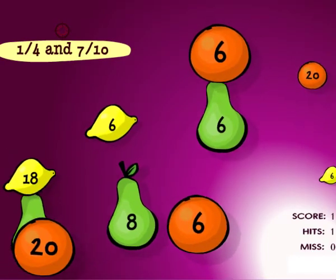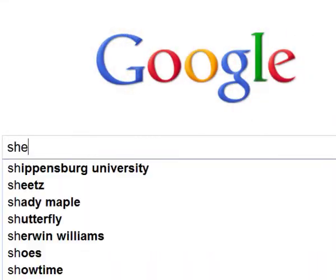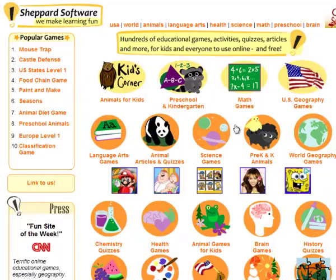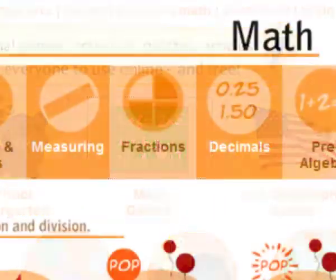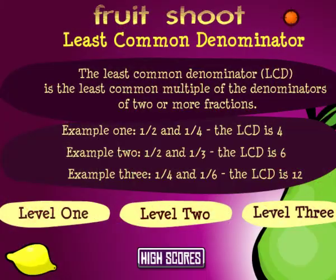Just remember, the more you practice, the easier it'll get. Now, just type Shep into your favorite search engine to find ShepardSoftware.com. Click on Math Games, then on Fractions, and then on Least Common Denominator, and try it for yourself.